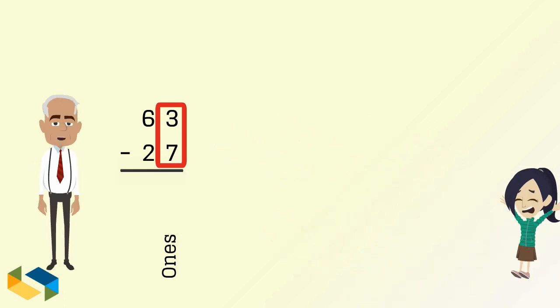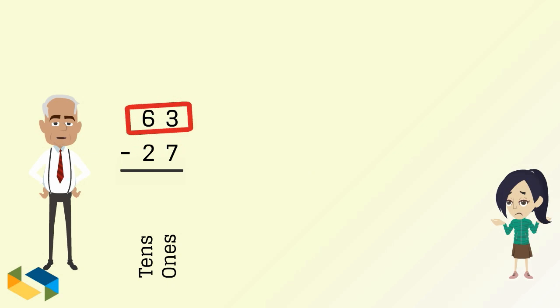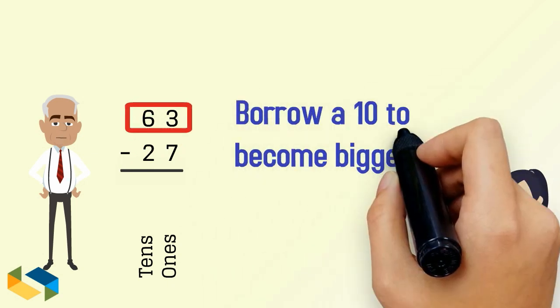For 3 to be a bigger number than 7, it has to borrow one 10 from the number at the tens place.